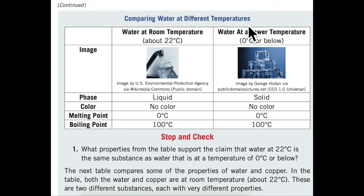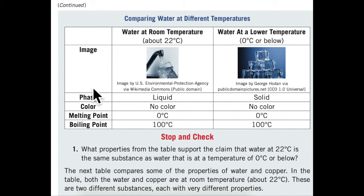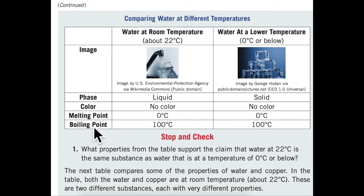Comparing water at different temperatures. Water at room temperature, about 22 degrees Celsius: Phase — liquid; Color — no color; Melting point — 0 degrees Celsius; Boiling point — 100 degrees Celsius.